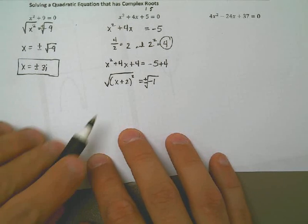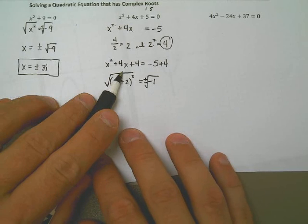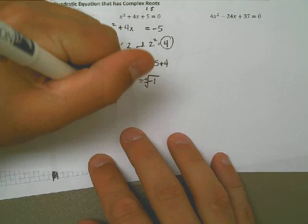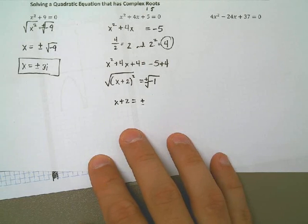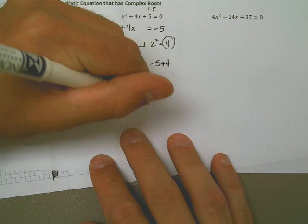Last thing, this is x plus 2, so I need to get the 2 away from it. I need to subtract it from both sides. And I'm going to write negative 2 plus or minus i. Two solutions. There we are.